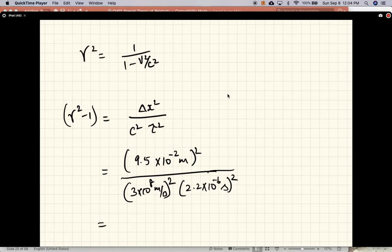This should be a dimensionless quantity because gamma is dimensionless. Let's make sure. There's a meter squared that cancels with a meter squared. That's 1 over second squared which cancels with that. So let's take care of powers of 10 first. This is 10 to the power of 16.